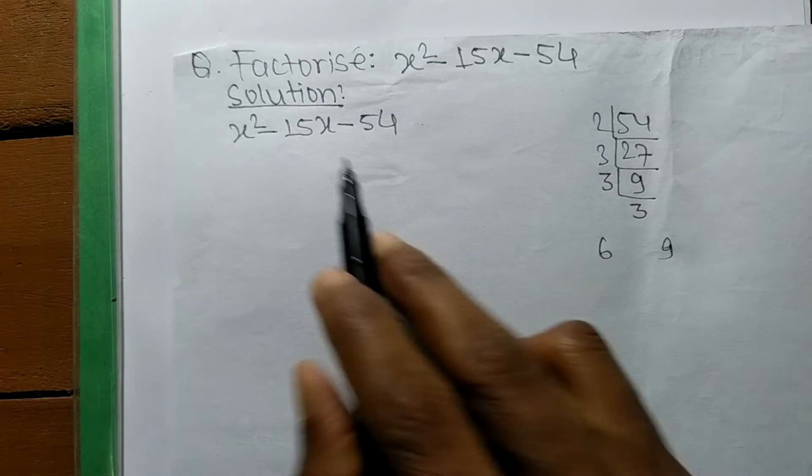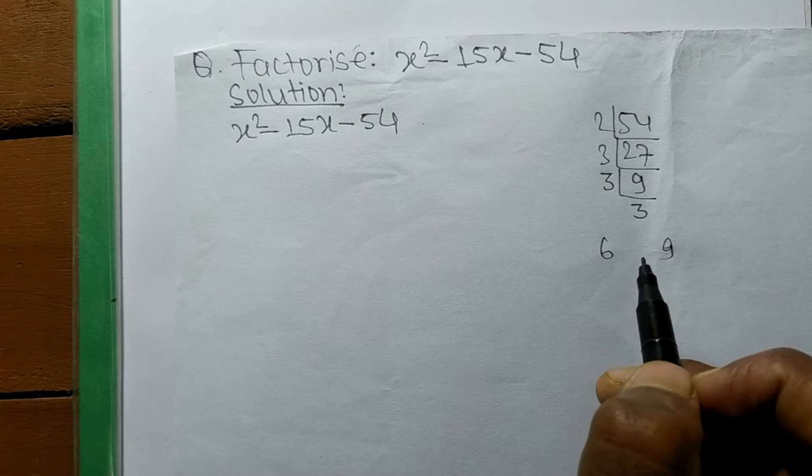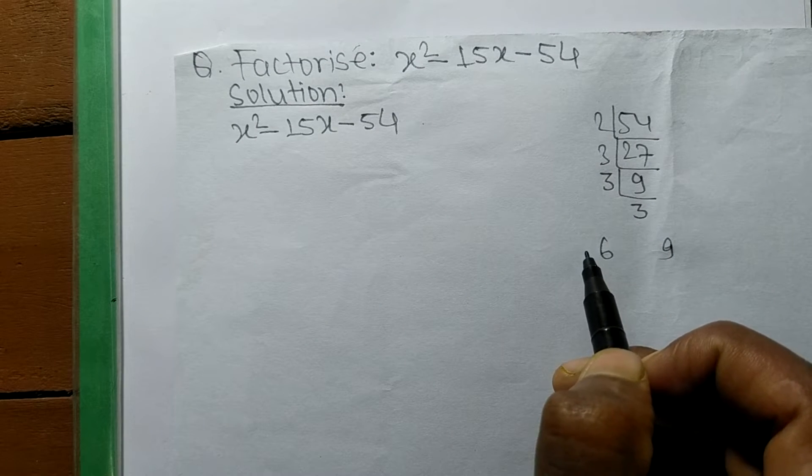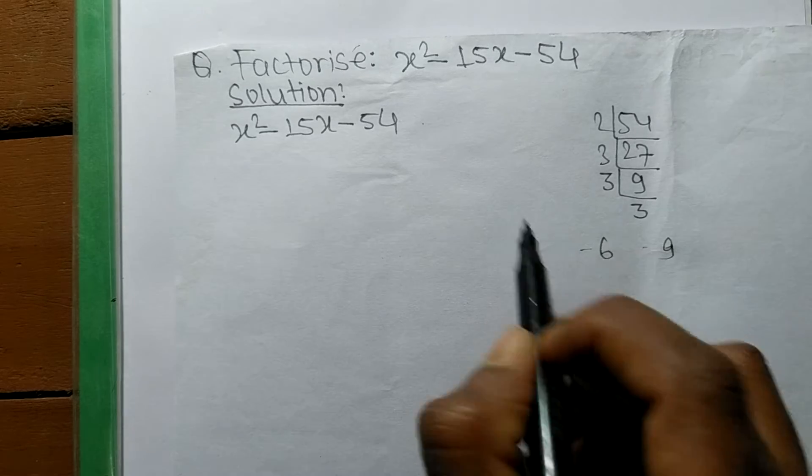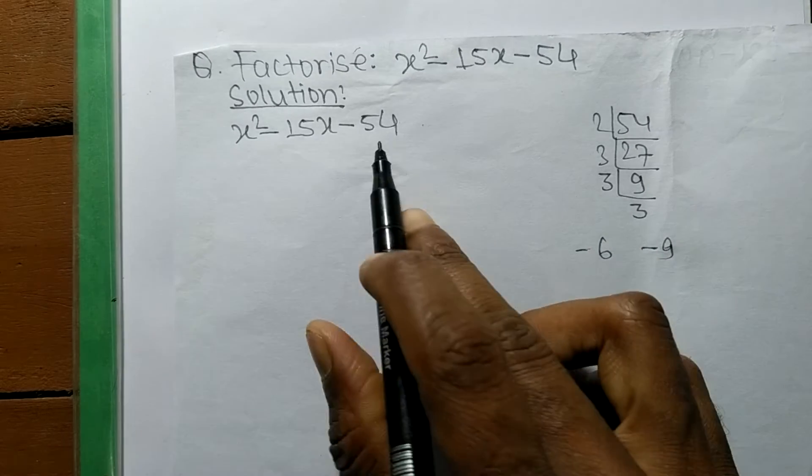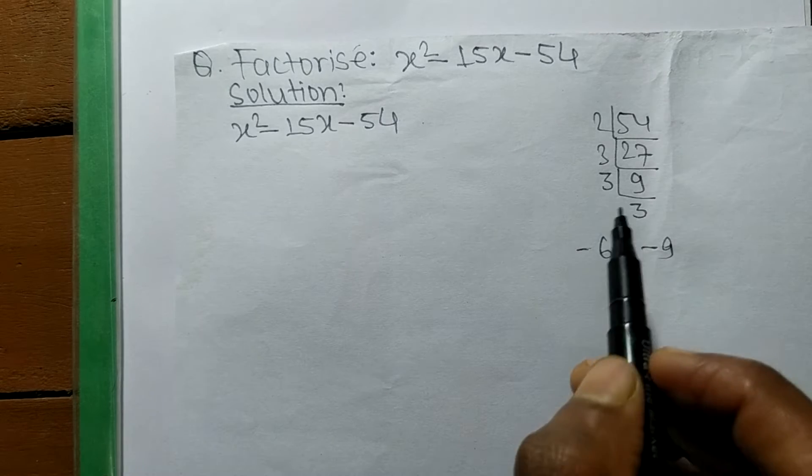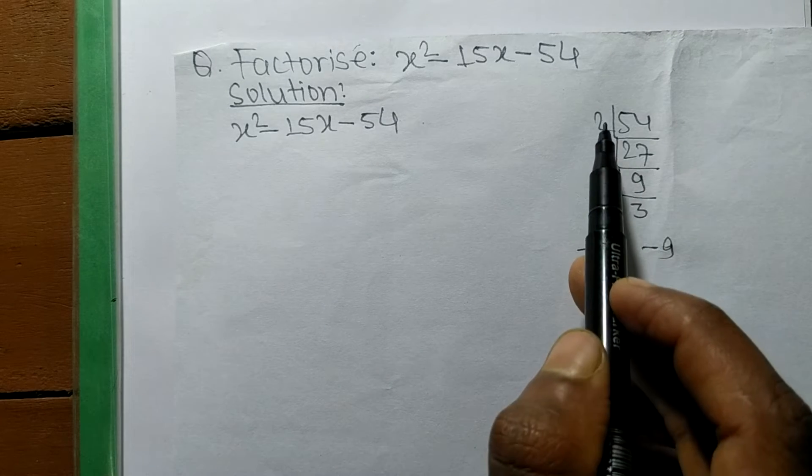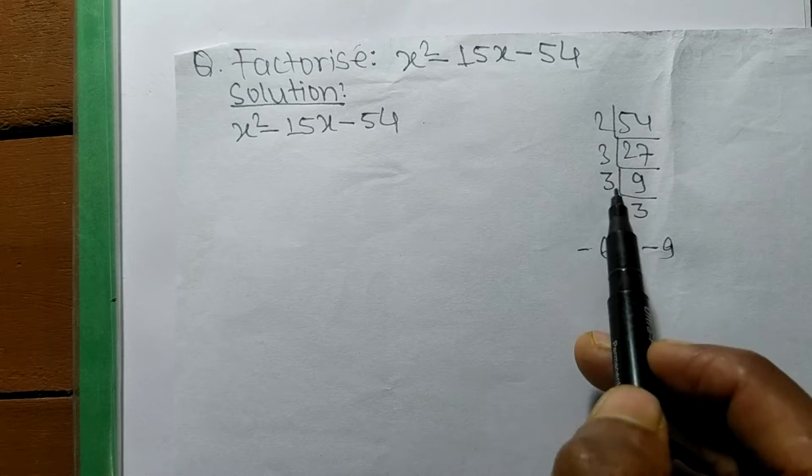But when we use the minus sign, minus times minus becomes plus, and we need minus. So let's try another combination: 2 times 3 equals 6, then 6 times 3 is 18, and the remaining is 3.